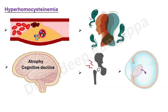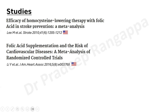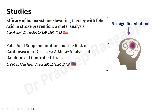Regarding treatment: we do treat with B12 injections, folic acid, and pyridoxine. If it is genetic, supplementation may not fully mitigate the effects, but levels still need to be kept optimal. Two landmark meta-analyses are notable: one on the efficacy of homocysteine-lowering therapy with folic acid in stroke prevention, and another on folic acid supplementation and risk of cardiovascular disease. Unfortunately, both meta-analyses of randomized controlled trials did not show major significant benefit in reducing stroke or cardiovascular events.